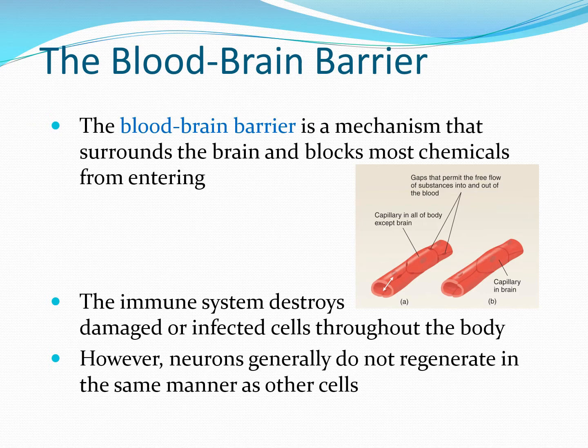The blood-brain barrier is a mechanism surrounding the brain that blocks most chemicals from entering, and we want this very badly. In the rest of our body we have an immune system with T cells and B cells creating antibodies that destroy damaged and infected cells. We don't really have this in the brain — we have microglia, but they don't do quite the same job. We also have some cell regeneration in the rest of the body, whereas neurons generally do not regenerate in the same way.